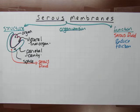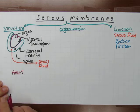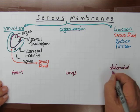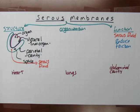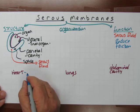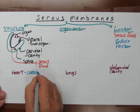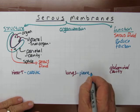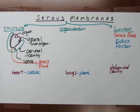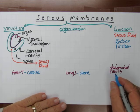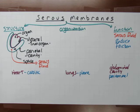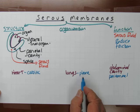Now let's organize these into groups. We'll use three main examples. First, we'll look at the heart — the word we use for heart is cardiac, as in cardiac arrest. For the lungs, we use the word pleura — P-L-E-U-R-A. You may have heard of pleurisy, which is a disease of the lining of the lungs. The abdominal cavity would be peritoneal. So let's look at the cardiac membranes, pleural membranes, and then the peritoneal membranes.